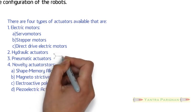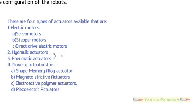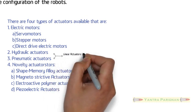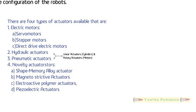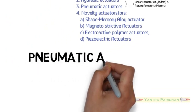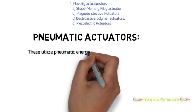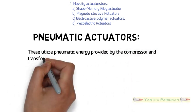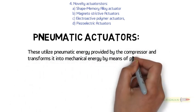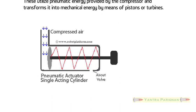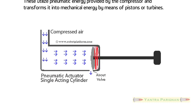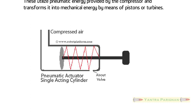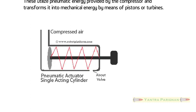Hydraulic actuators and pneumatic actuators both are classified as linear actuators called cylinders and rotary actuators called motors. Pneumatic actuators utilize pneumatic energy provided by the compressor and transform it into mechanical energy by means of pistons or turbines. Figure shows small animation on working of pneumatic actuator that utilizes compressed air to provide actuation.